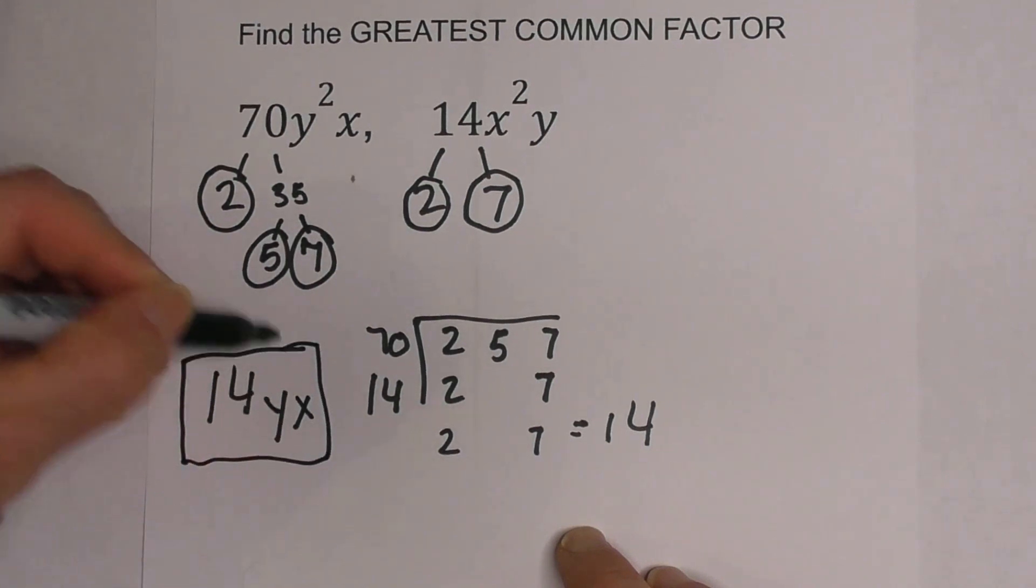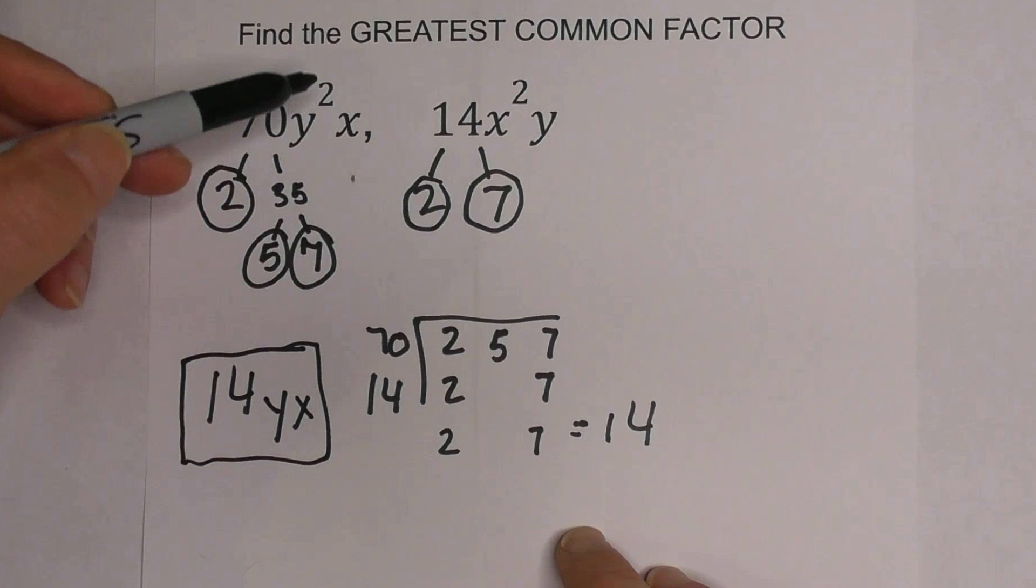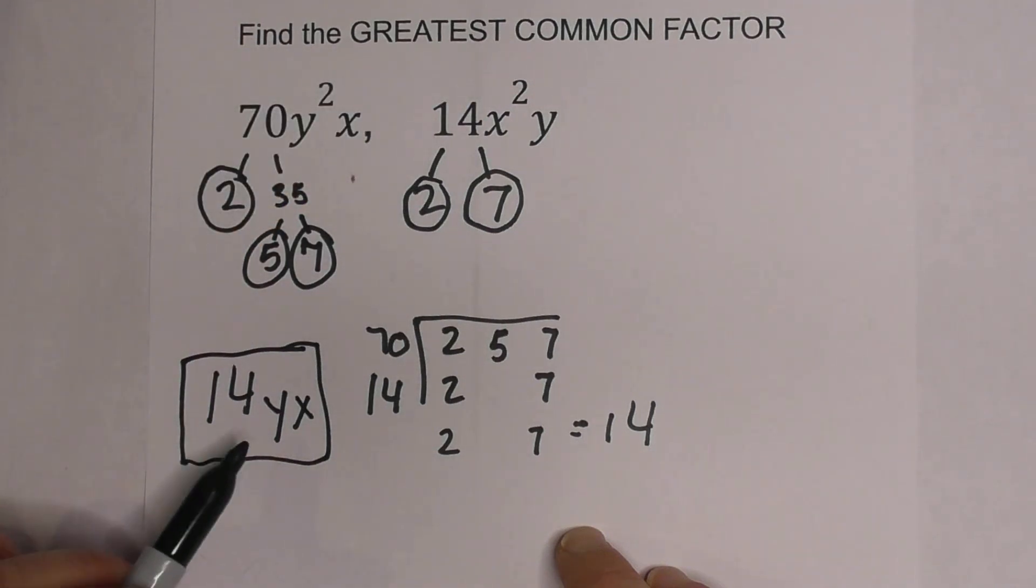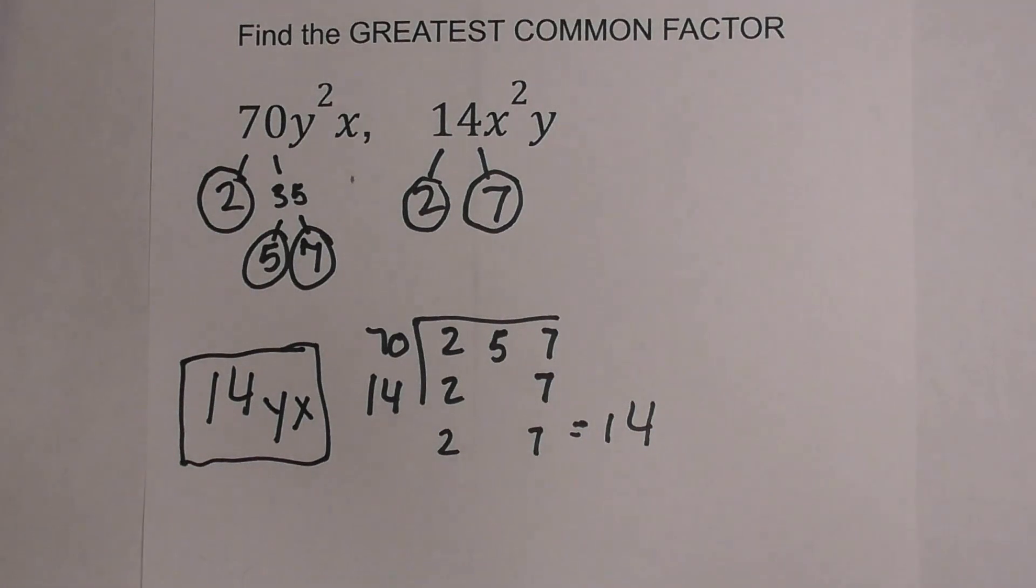So the greatest common factor of 70y²x and 14x²y is 14yx. Thanks for watching.